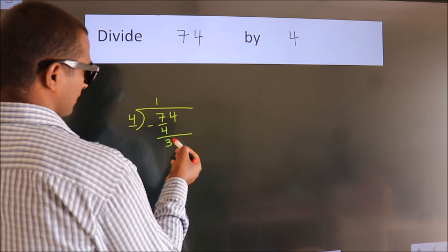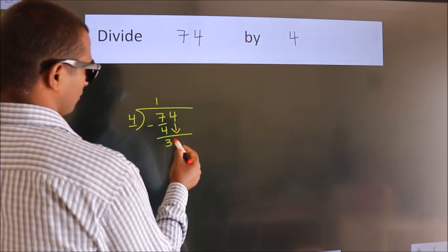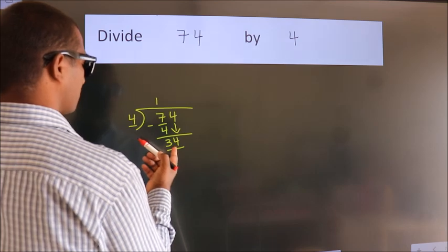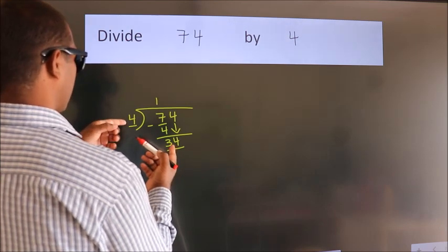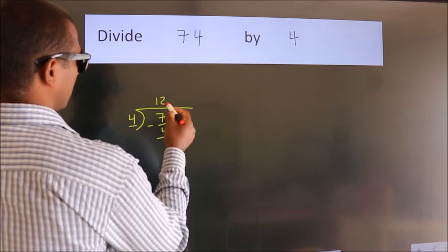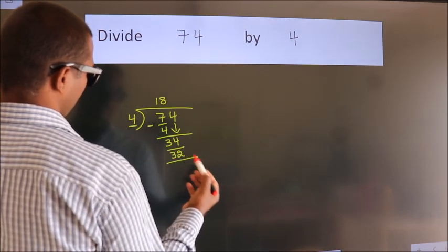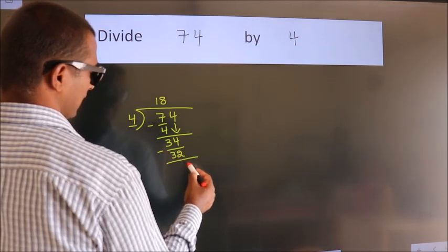After this, bring down the beside number, so 4 down. So 34. A number close to 34 in the 4 table is 4 eights, 32. Now we subtract. We get 2.